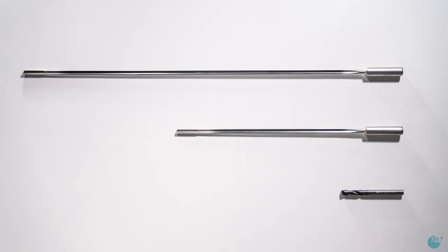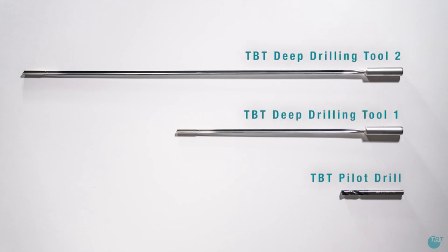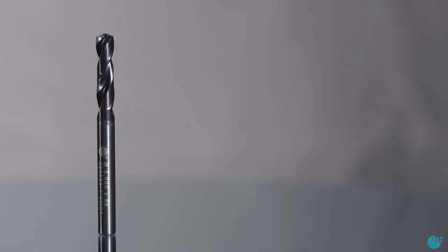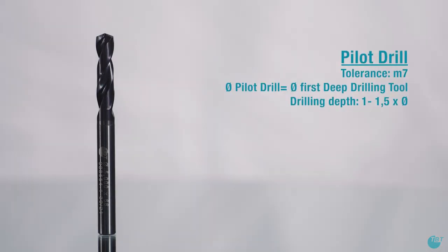When drilling large drilling depths on machining centers, it is necessary to work with several deep drilling tools. First, you always need to machine a pilot hole to guide the single lip drill. The TBT pilot drill with the tolerance M7 which is to be used here has to correspond to the diameter of the first deep drilling tool.